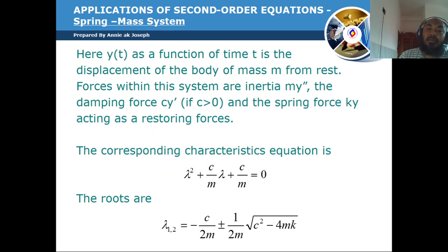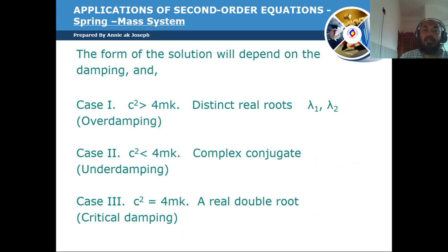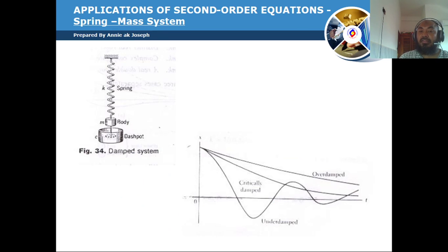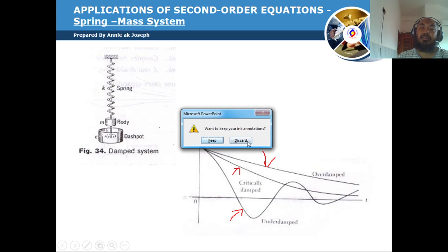For the spring-mass system, we may encounter the terms over-damping, critical damping, and under-damping. The graphs represent each case: under-damping, critical damping, and over-damping. I have a video showing what each system looks like.